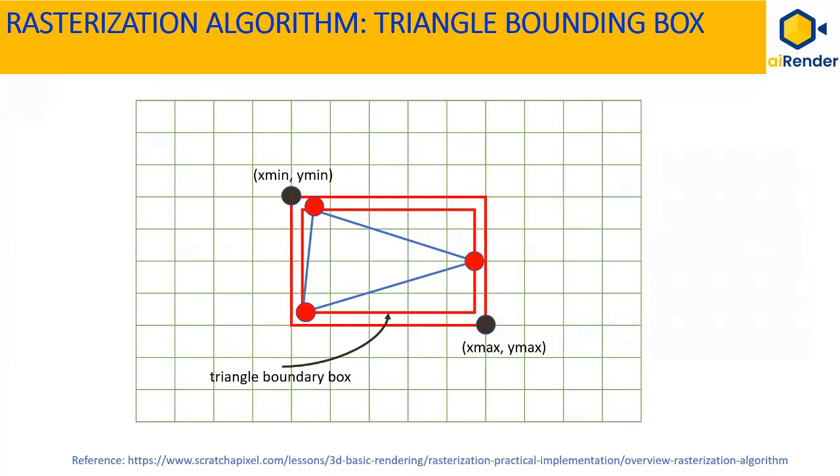Now, let's go through a rasterization algorithm. In order to reduce the number of pixels that need to be traversed as part of rasterization for each triangle, the algorithm computes a bounding box for the triangle to be rasterized. Computing the bounding box involves finding the minimum and maximum x and y coordinates of the three vertices making up the triangle in raster space.